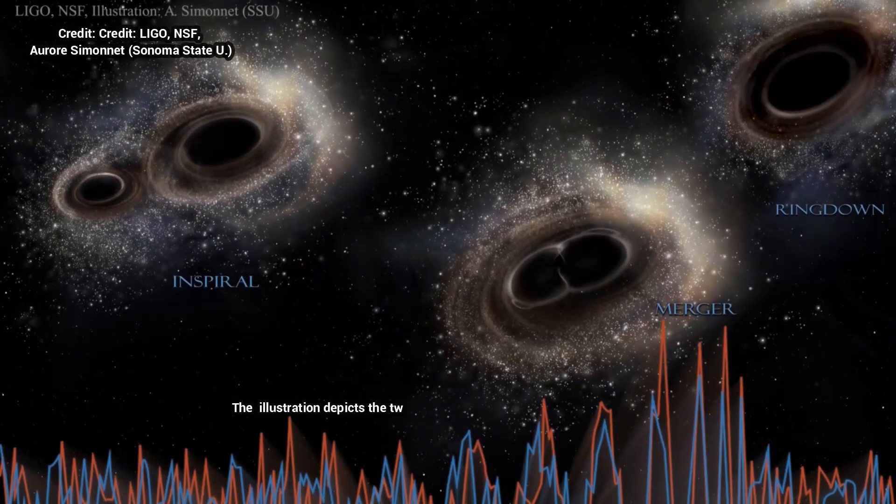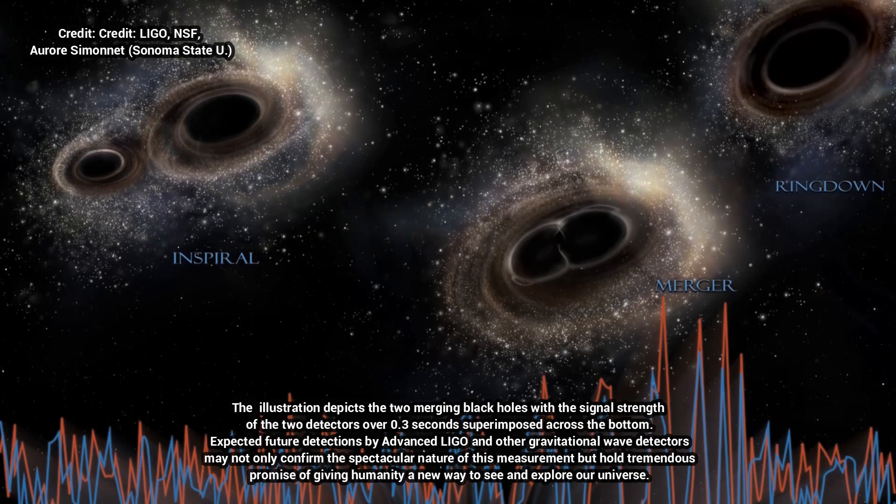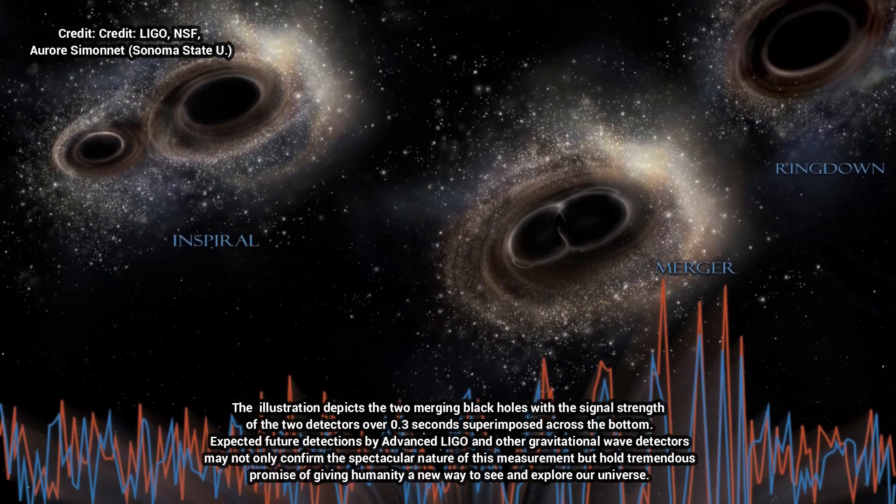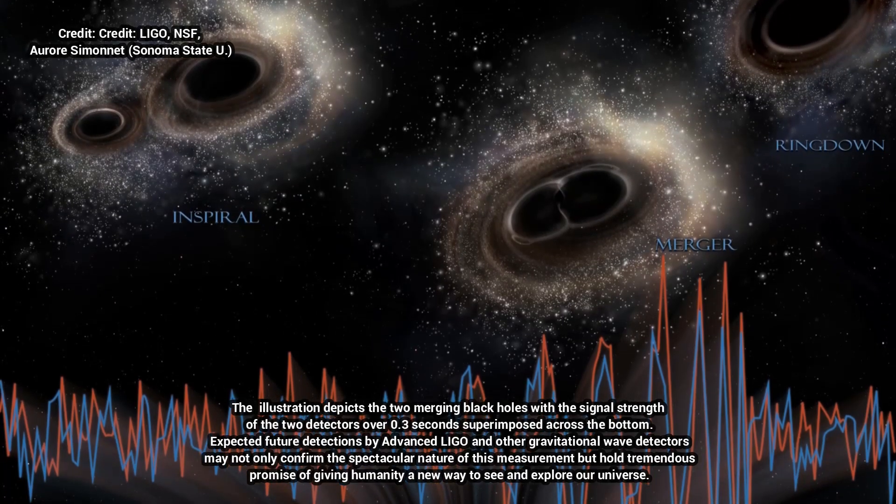As part of Giesler's graduate work, he started to investigate whether overtones could be detected in current gravitational wave data, in addition to the main signal or tone, even though most scientists believed these overtones were too faint.